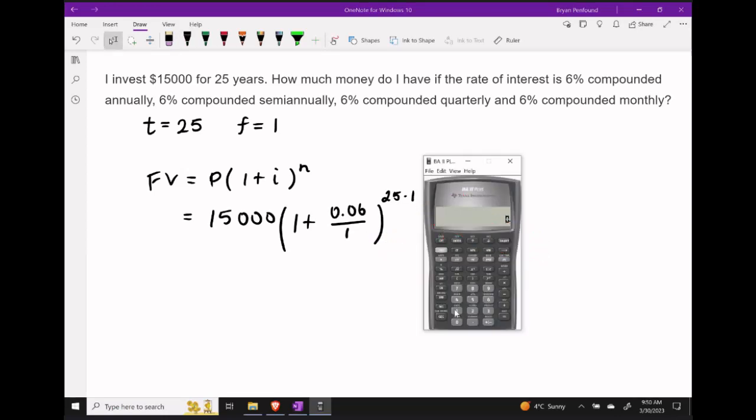Let's go ahead and try to get this into our calculator, beginning with our present value of $15,000. We're going to multiply by open bracket, 1 plus .06 divided by 1, close our bracket, and then we want to raise this number to the power of 25 times 1. And that gives us a future value of $64,378.06 for the first case.